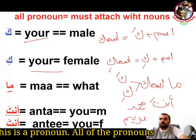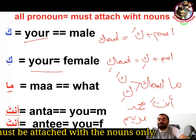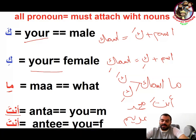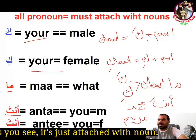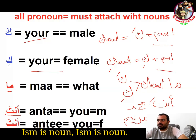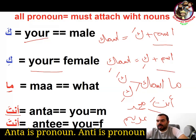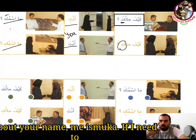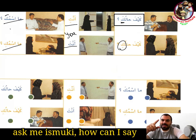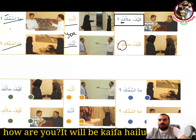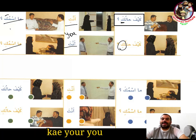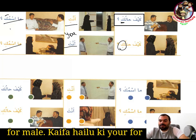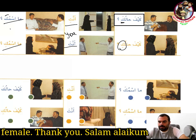These are pronouns. All pronouns must be attached with nouns only — 'ism' is a noun, 'anta' is a pronoun, 'anti' is a pronoun as well. So if I need to ask your name: 'ma ismuka' for male, 'ma ismuki' for female. How are you: 'kaifa haluka' for male, 'kaifa haluki' for female.